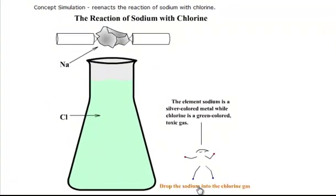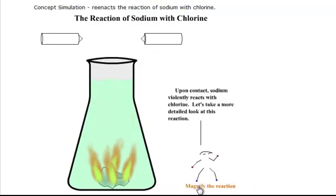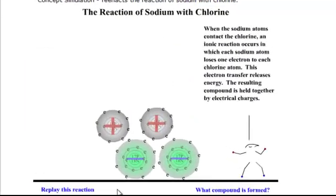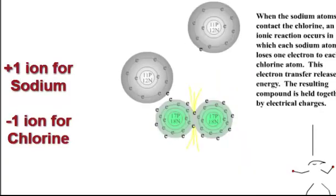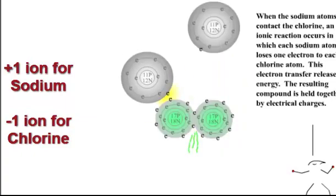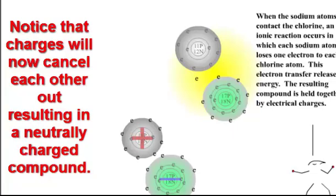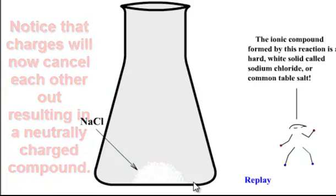If we drop this sodium into the chlorine gas, sodium is generally a silver-colored metal, while chlorine is going to be a greenish-colored toxic gas. And if we drop that sodium in, it instantly reacts violently to the chlorine. And if you take a look at what exactly is happening in this reaction, you can see that the sodium is giving its electron to chlorine. Sodium is going to lose an electron and become a positive ion, positive one ion, because it just lost one electron, while the chlorine becomes a negative one ion because it just gained one electron. The resulting compound is held together by these electrical charges, a positive and negative charge. And the result is a new compound called sodium chloride. Sodium chloride is the salt that's left on the bottom of the beaker.